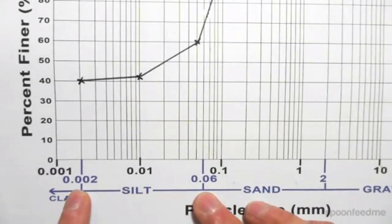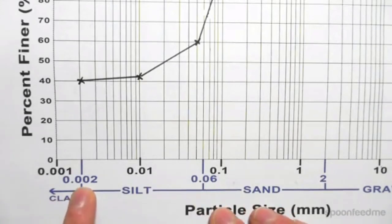We had silts, which range from 0.002 to 0.06 millimeters, and clays, which was anything less than 0.002 millimeters.